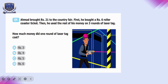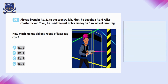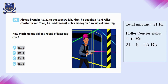Question number six: Ahmed brought rupees 21 to the fair. He bought a roller coaster ticket for rupees 6, leaving 15 rupees. He used the rest on three rounds of laser tag. Dividing 15 by 3 gives 5. So one round of laser tag costs rupees 5, and option C is correct.